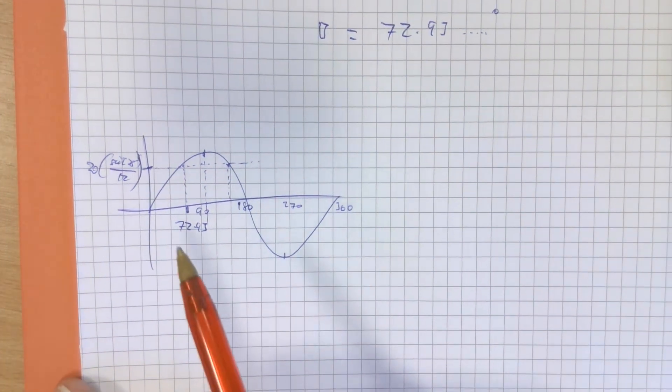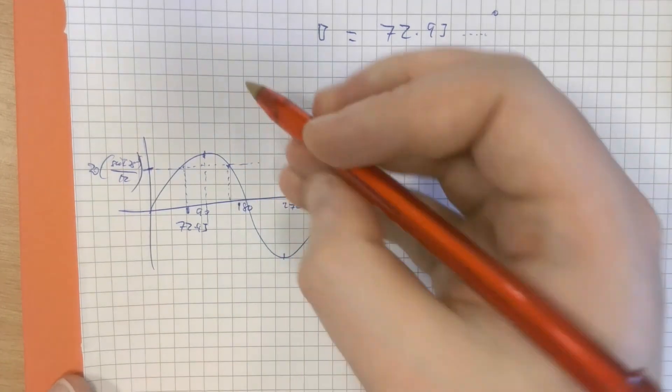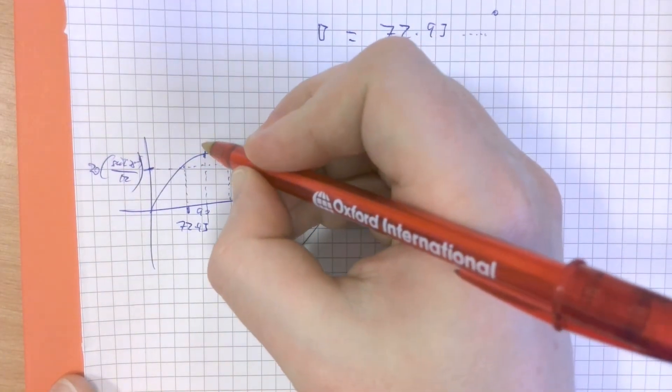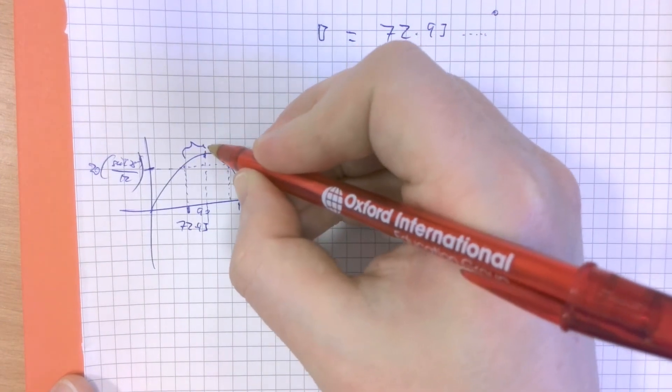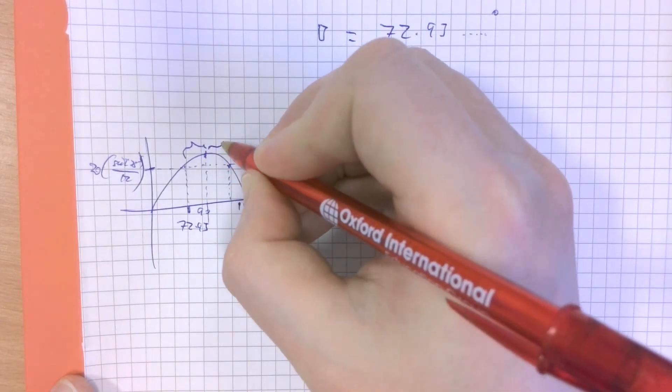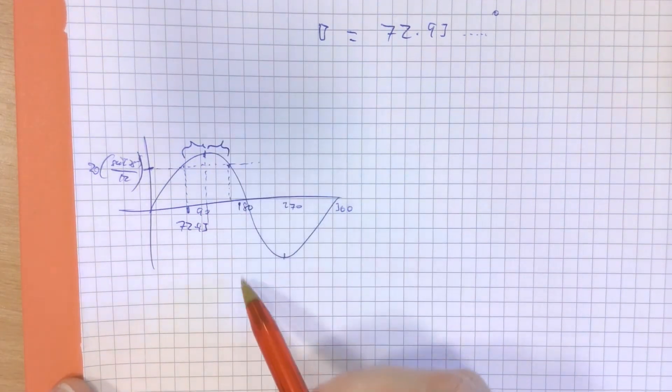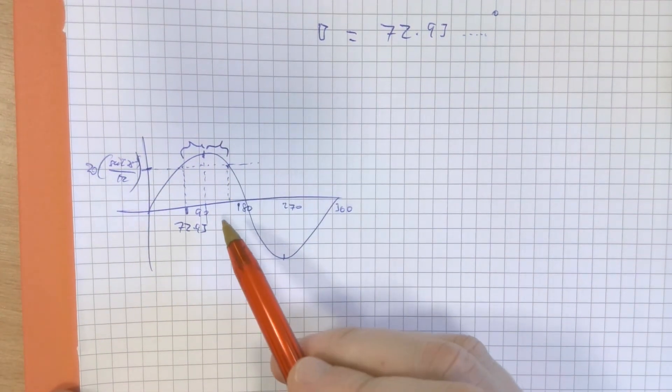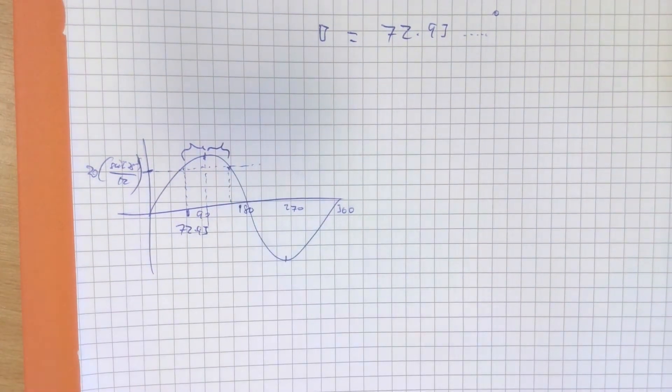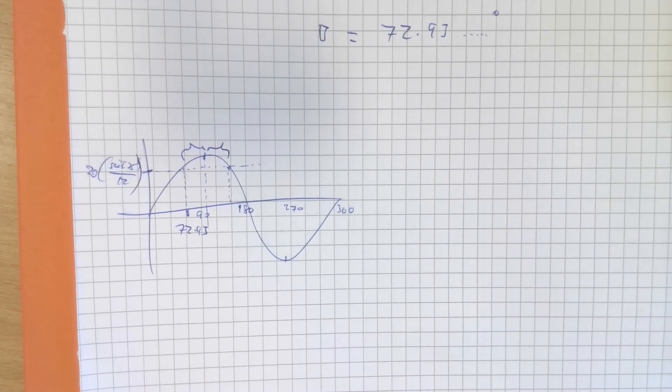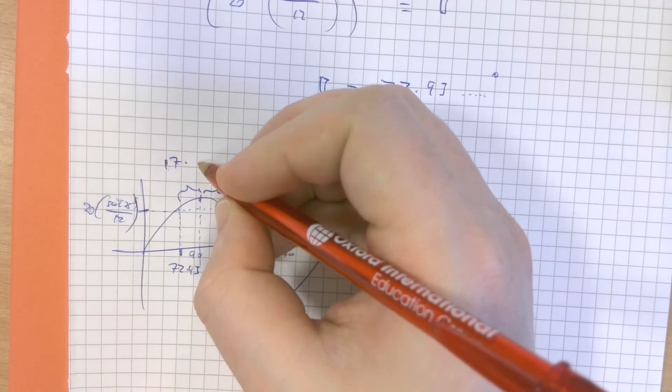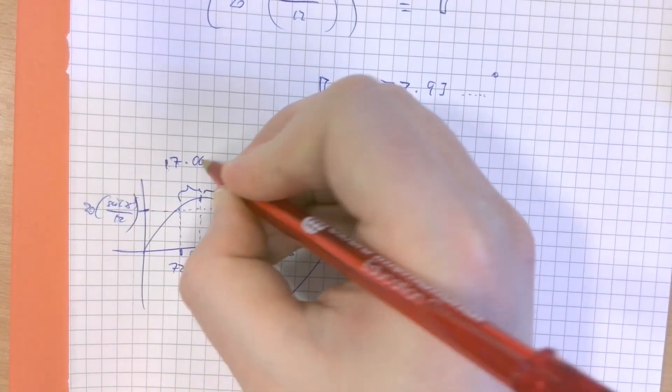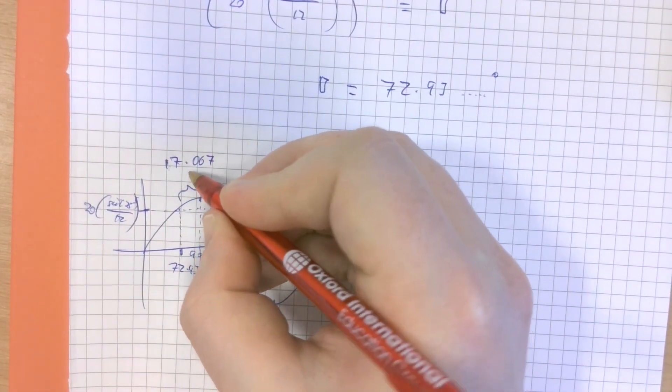So I need to effectively use what I know about the nature of this shape. I've shown you guys this a while ago. Effectively, the difference between 90 and 72.93 is the same length as the distance between 90 and whatever this obtuse angle is.